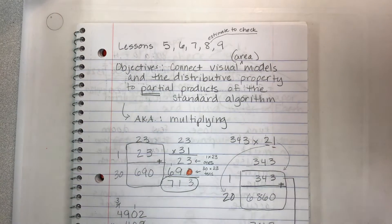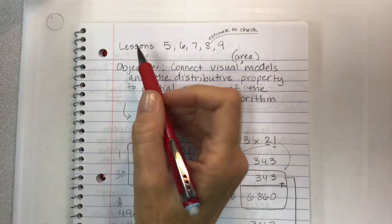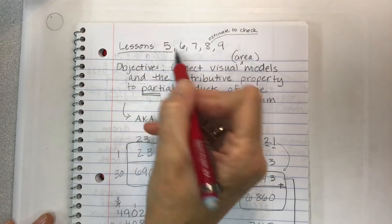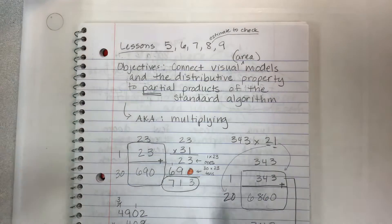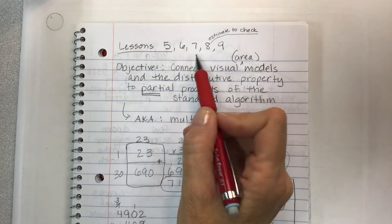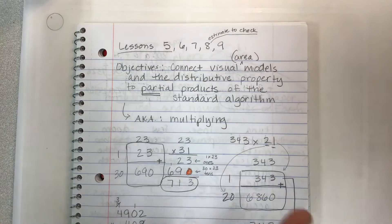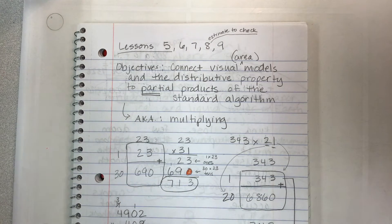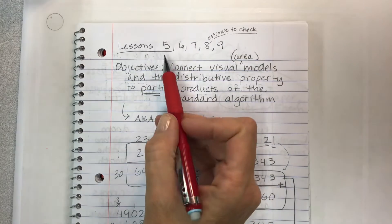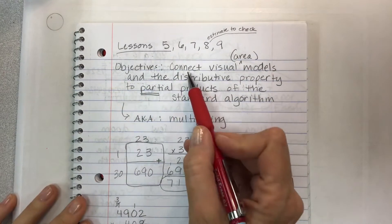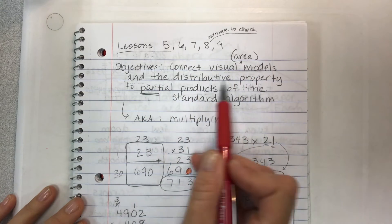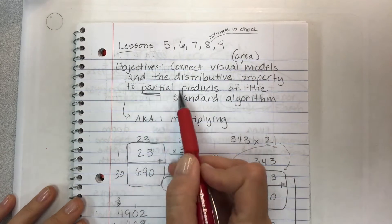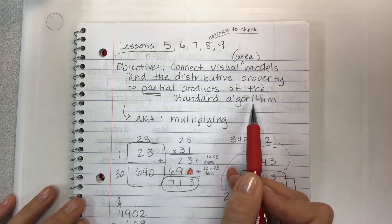Hey kids, welcome to module 2 lesson 5 video. This objective is going to really help us with the next several lessons. In lesson 5 the objective is to connect visual models, which are area models, and the distributive property to partial products of the standard algorithm.